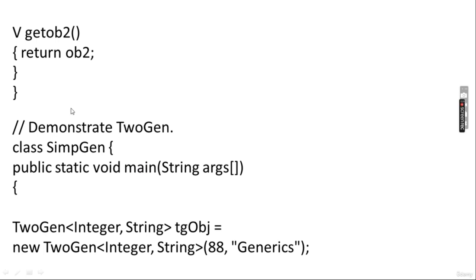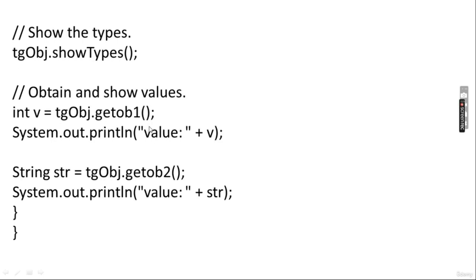All things are the same as the previous example — only V is added using a comma-separated list. In the main method, a TwoGeneric<Integer, String> object is created. T will be replaced by the Integer wrapper class and V will be replaced by the String wrapper class. Then calling twoGenericObject.showTypes() will display the types of T and V.